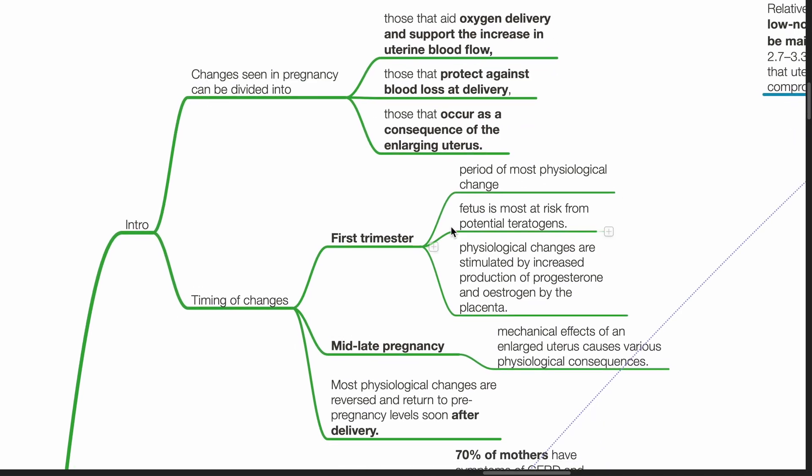The first trimester is the period of most physiological change. The fetus is most at risk from potential teratogens, and physiological changes are stimulated by increased production of progesterone and estrogen by the placenta.